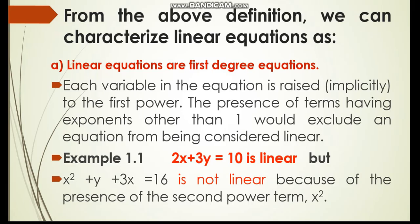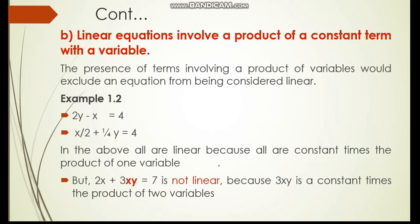The second character or feature of linear equation is, linear equations involve a product of a constant term with a single or one variable. The presence of terms involving a product of variables would exclude an equation from being considered linear. Which means, a product of two or more variables is not allowed in a linear equation. If two variables are multiplied, the equation is considered to be non-linear.